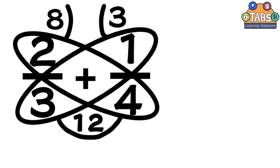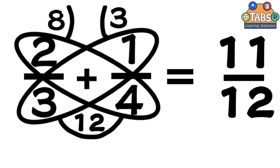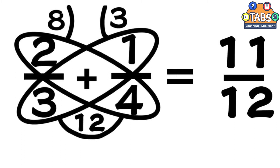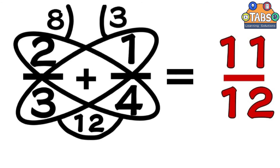Now add the two antenna numbers to get the numerator: 8 plus 3 equals 11. So the fraction will be 11 over 12. Remember to simplify the fraction if possible. Since 11 over 12 is already in its simplest form, the answer is 11 over 12.